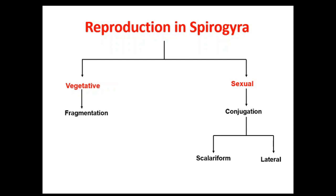The reproduction methods in Spirogyra: Spirogyra reproduces mainly by two methods — one is the vegetative method and the other is the sexual method. Vegetative reproduction takes place by the process of fragmentation, in which the filaments break into pieces and the broken pieces grow into new filaments through cell division. Sexual reproduction occurs by the process of conjugation, which can be of two types: lateral conjugation and scalariform conjugation. Conjugation will be discussed in detail in the next lecture.